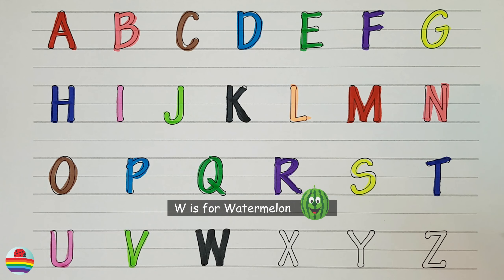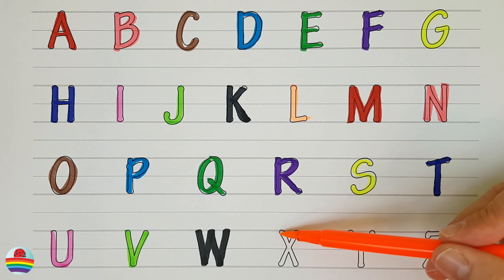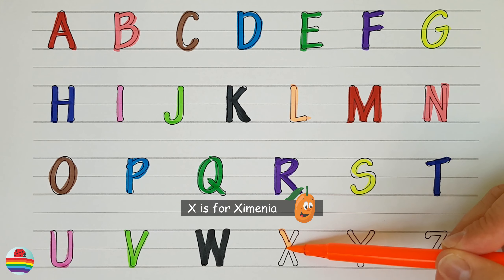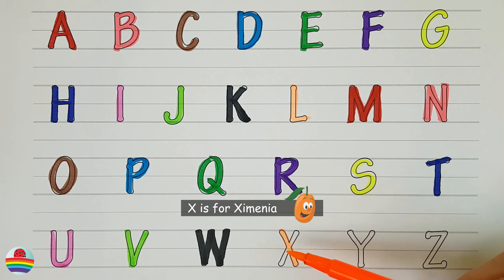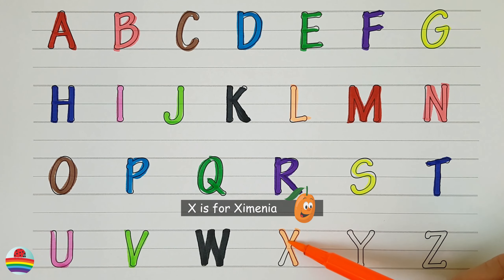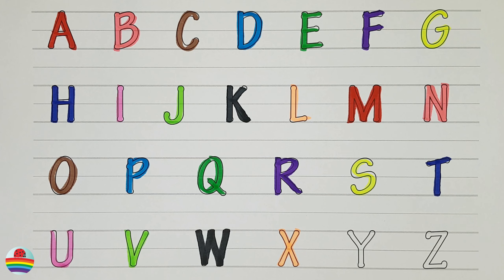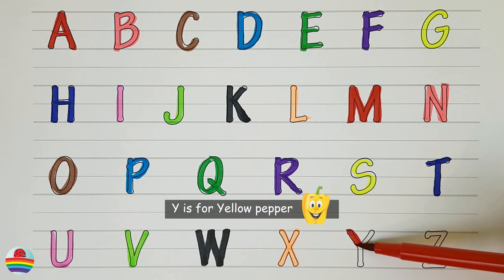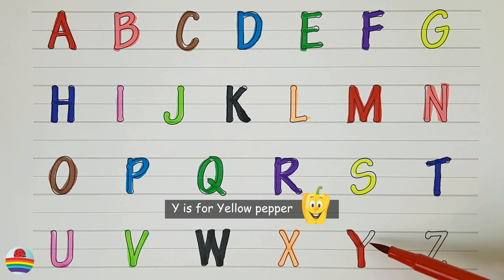U. U is for Ugly Fruit. U. V. V is for Victoria Plum. V.